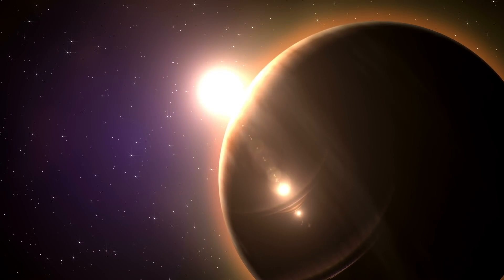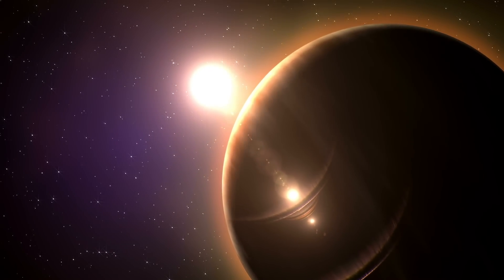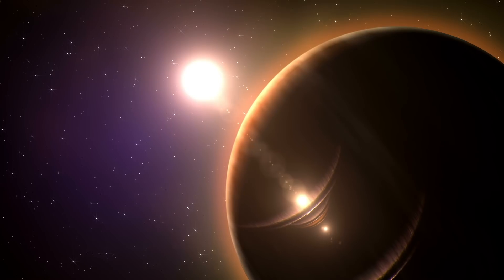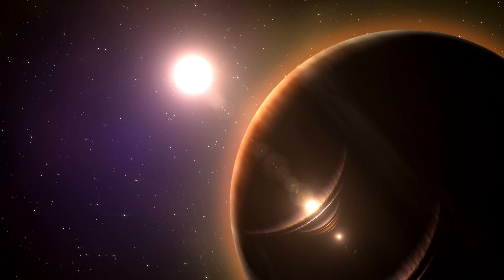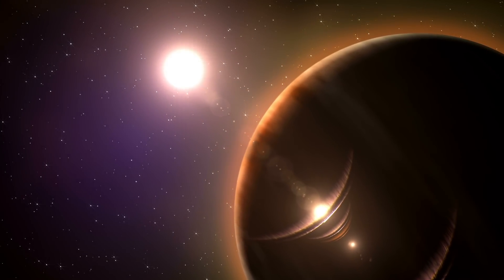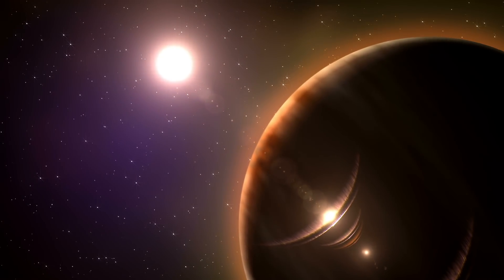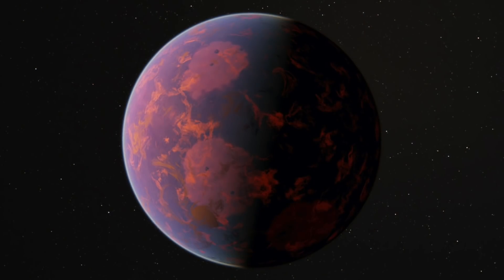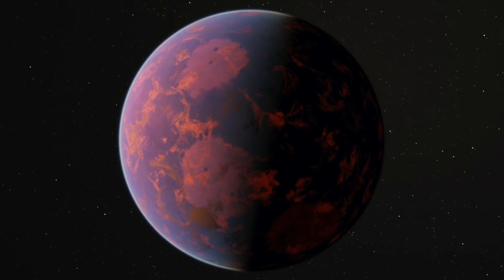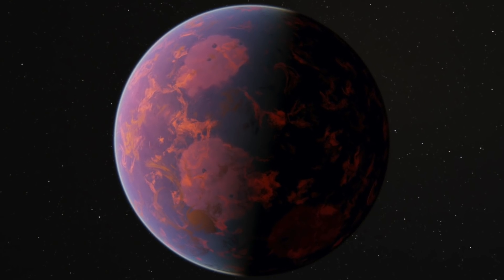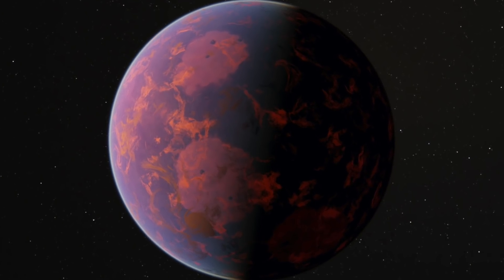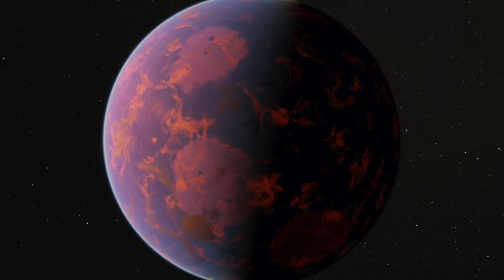Scientists estimate that the planet GJ504b is about four times bigger than Jupiter and the solar system it is located in is approximately 100 to 200 million years old. This is a remarkably young age when compared to other solar systems in the universe. Our solar system is estimated to be about 4.571 billion years old.